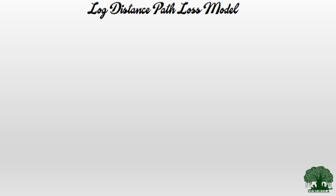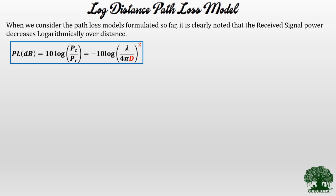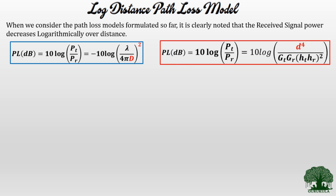Starting with the log distance path loss model: considering the path loss models formulated so far — the free space equation and the two ray model — it is clearly noted that the received signal power decreases logarithmically over distance. For the free space equation the path loss degrades on a logarithmic scale over d², and for the two ray model it degrades over d⁴.